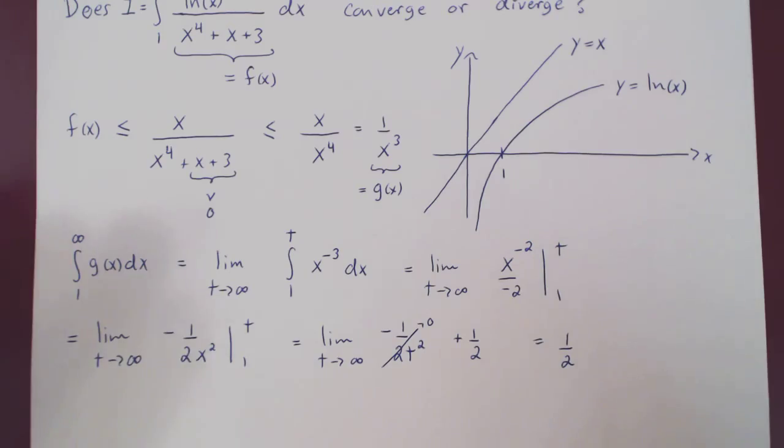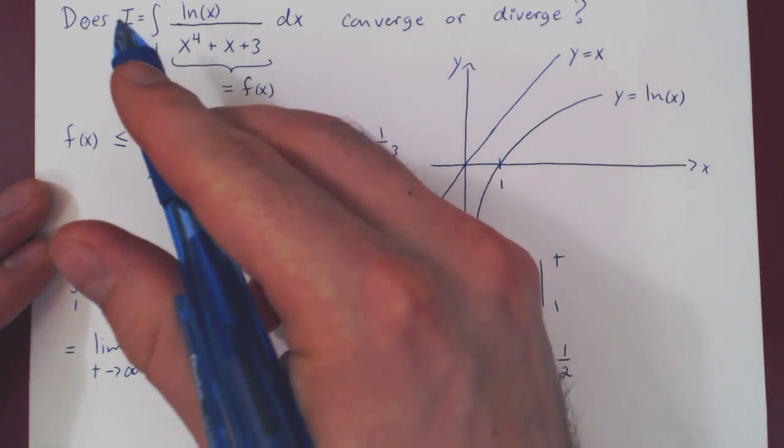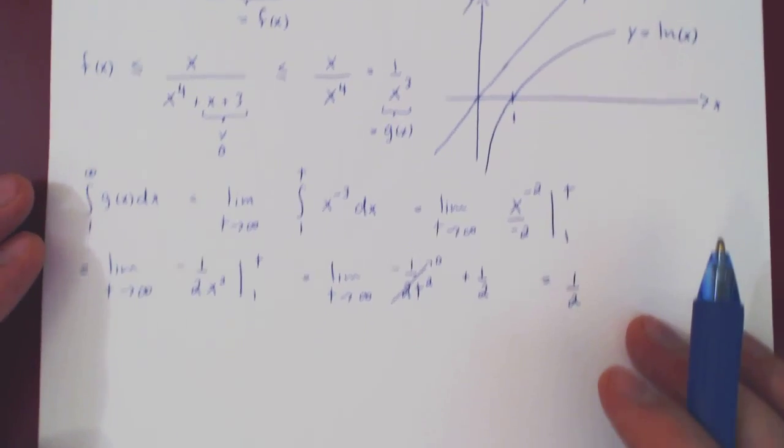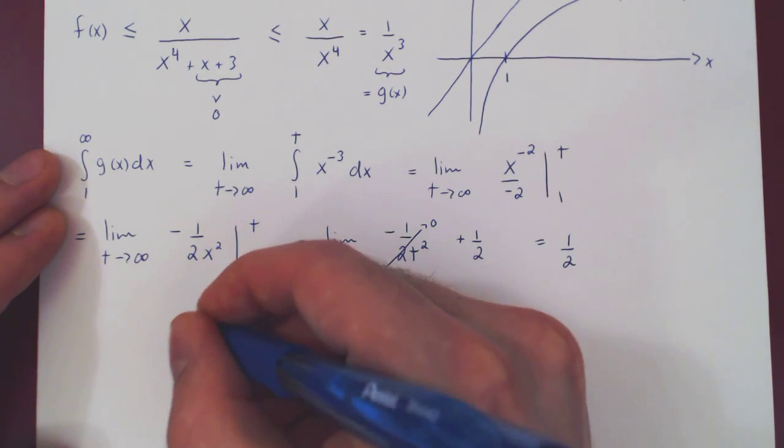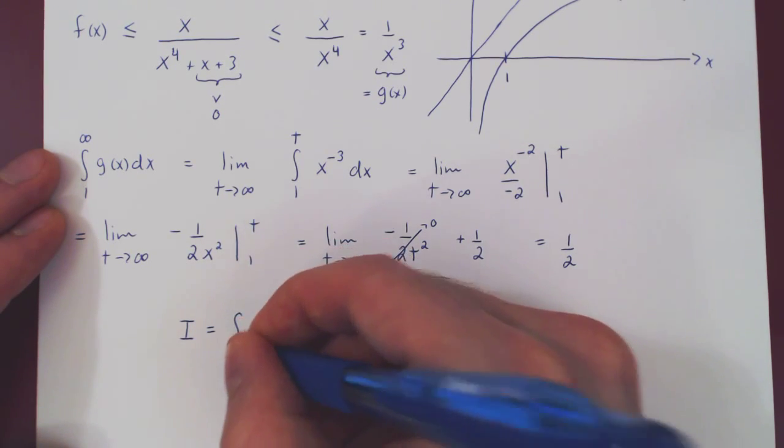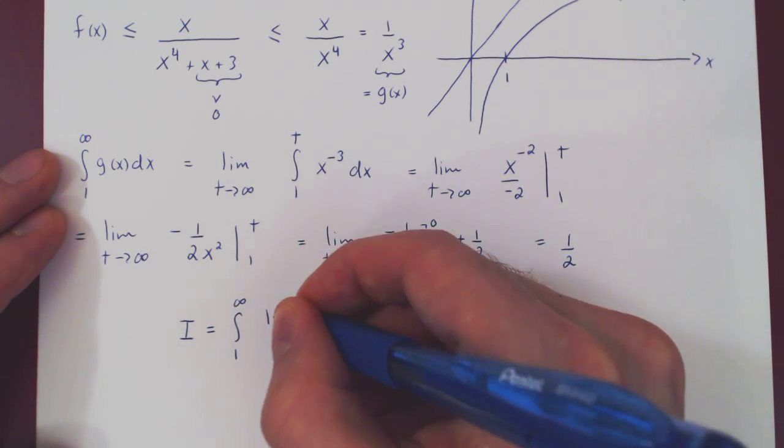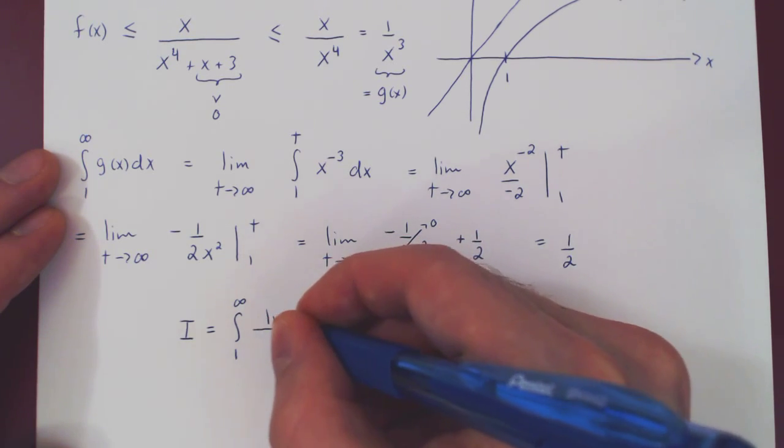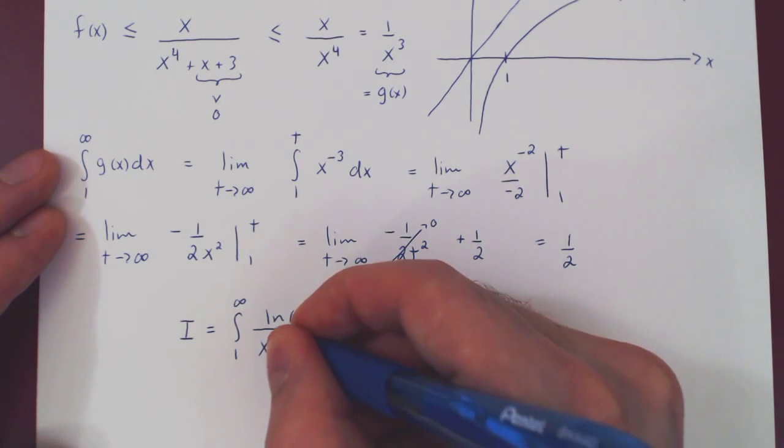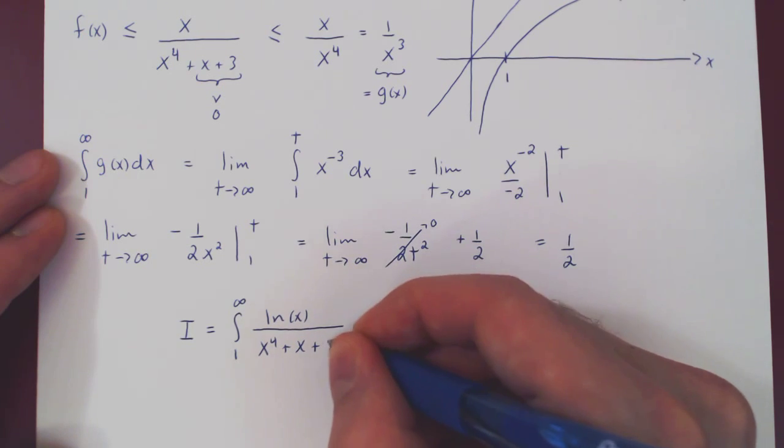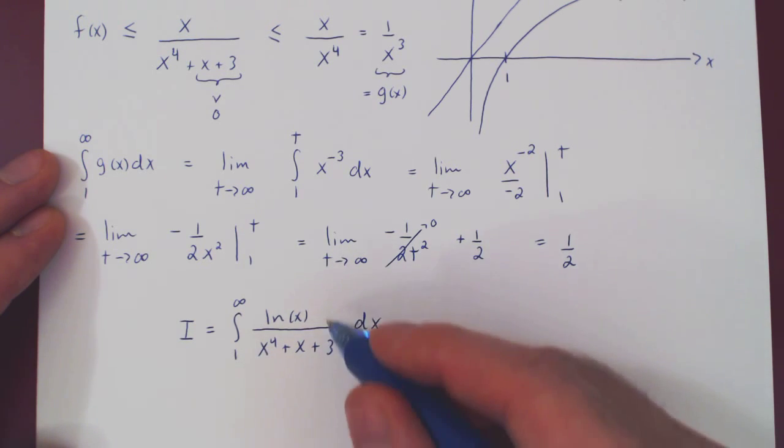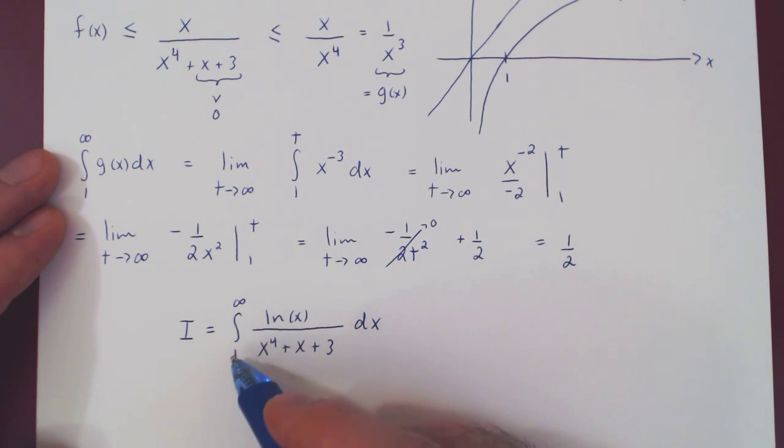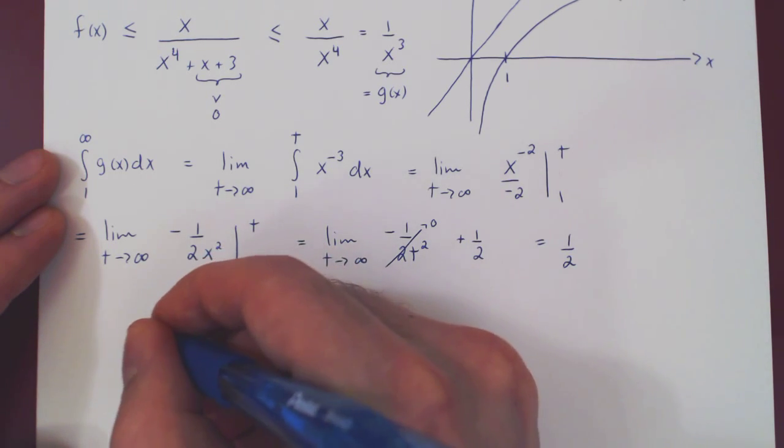And I'll think of what we have now. You say, okay, we have I. Let me rewrite it here. So, our initial improper integral, integral from 1 to infinity of ln of x, over x to the 4, plus x plus 3. Now, again, because the function is non-negative, this is the area below this curve, between 1 and infinity. It's at least 0.